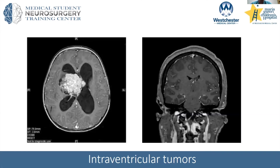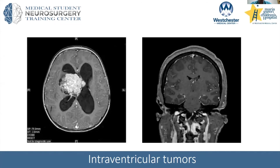Intraventricular tumors are another class of lesions based on location. This is a choroid plexus papilloma — these can be very bloody cases and you usually have to find the main feeding vessel to get control. They're commonly associated with hydrocephalus, either because the tumor produces fluid or obstructs normal flow. This lesion came back as a central neurocytoma. Other similar lesions include subependymal nodules and subependymal giant cell astrocytomas. With very large ventricles and smaller lesions you could approach them endoscopically.